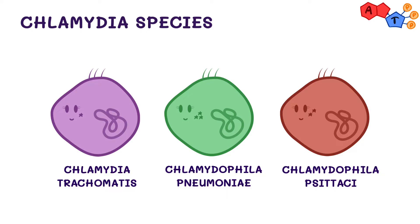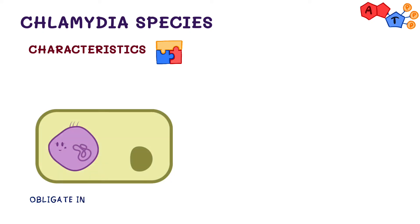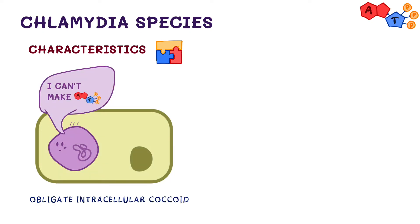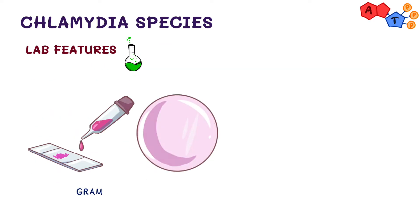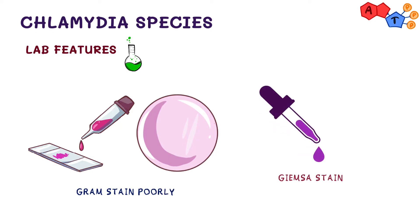Chlamydia is an obligate intracellular coccoid, meaning it can't make its own ATP and is known as an energy parasite, because it relies on host cells for ATP synthesis. They Gram stain poorly, so what do we use to stain them? We use Giemsa stain, which can also identify Plasmodium and intracellular protozoa — it's very good for intracellular structures.